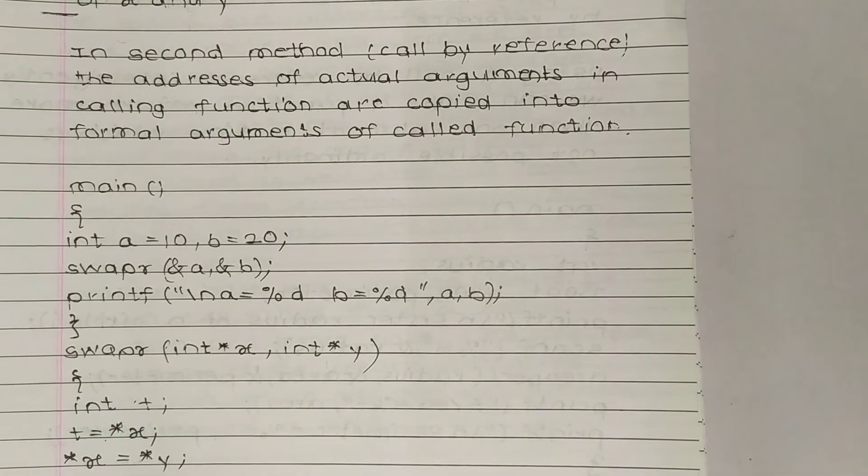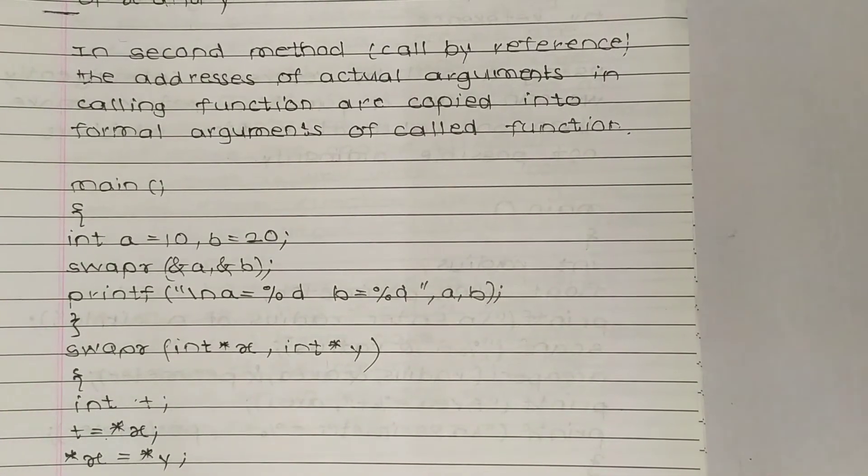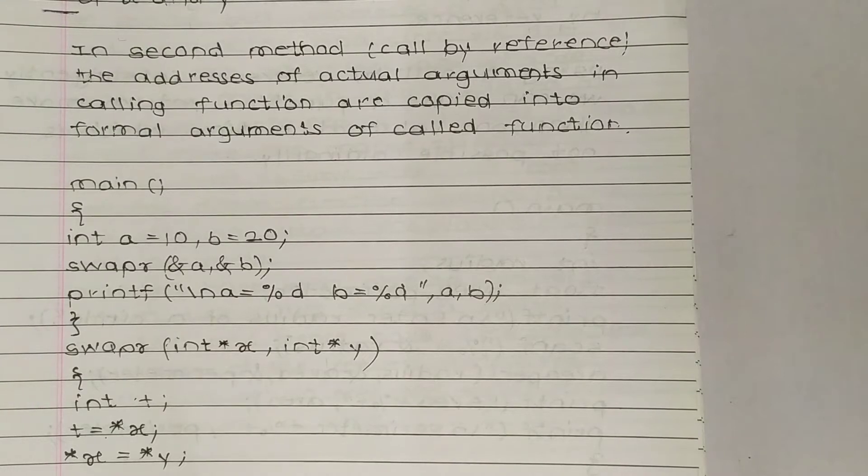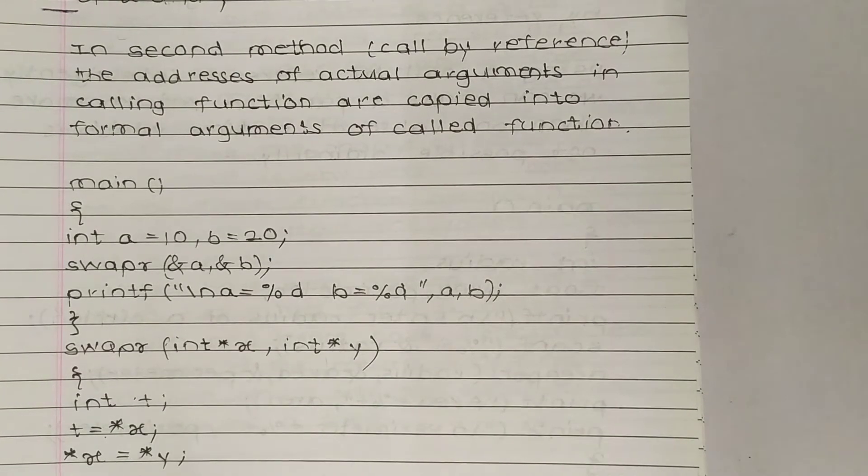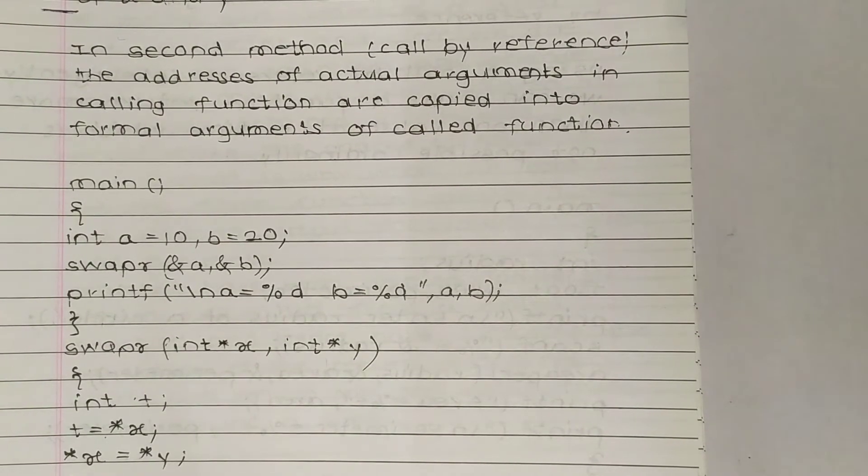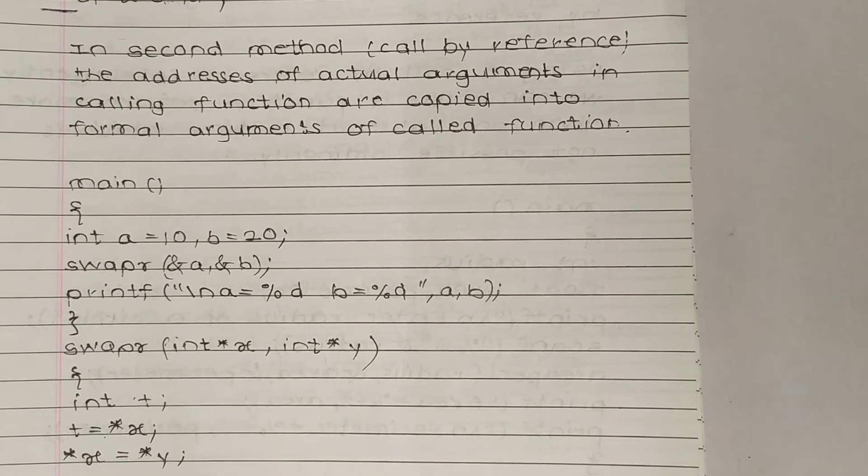There is a second method called call by reference. In this method, the addresses of actual arguments in the calling function are copied into formal arguments.